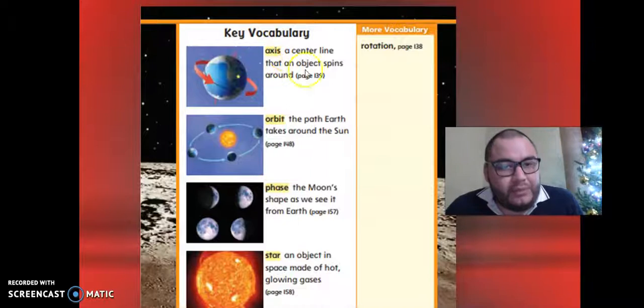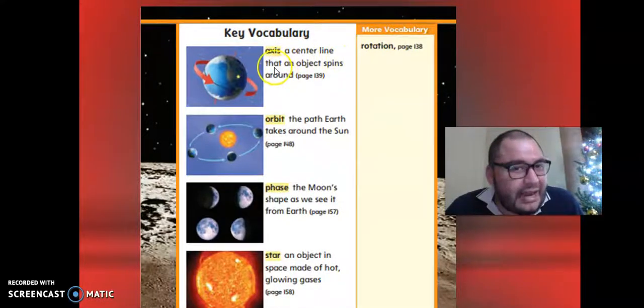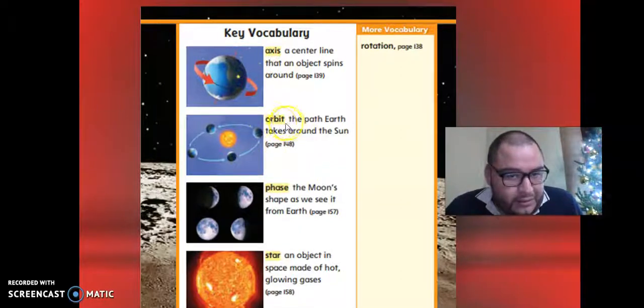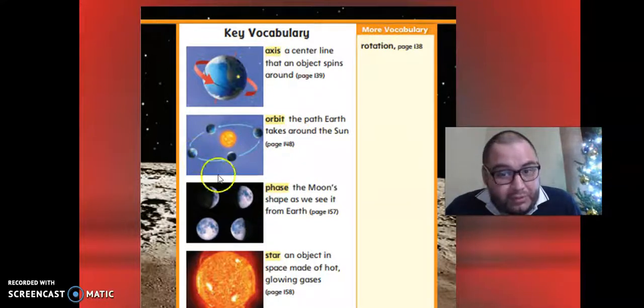We're going to see axis. Axis is a center line that an object spins around. Orbit: the path Earth takes around the Sun. It's like the movement or the line where one object moves.